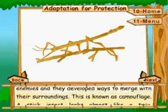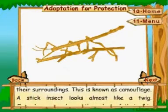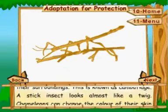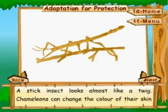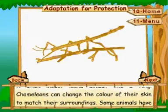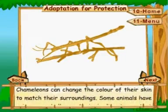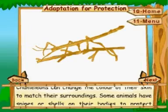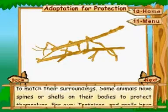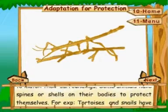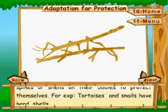Adaptation for protection. Animals need to defend themselves from enemies, and they develop ways to merge with their surroundings. This is known as camouflage. A stick insect looks almost like a twig. Chameleons can change the color of their skin to match their surroundings.